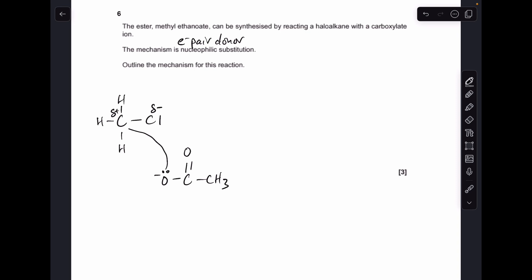We show that by drawing a curly arrow from that lone pair on the O- to that carbon. There's the product there, and there's the new bond that's formed from this donation of this electron pair.